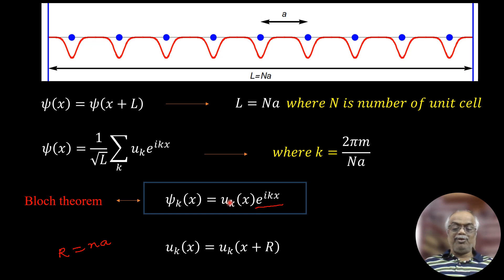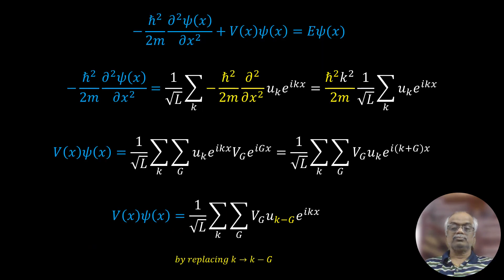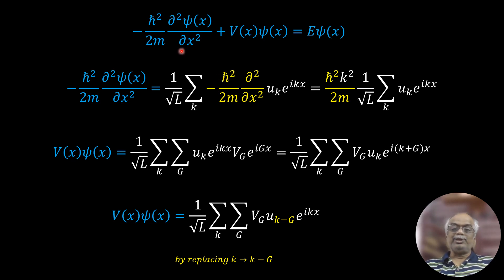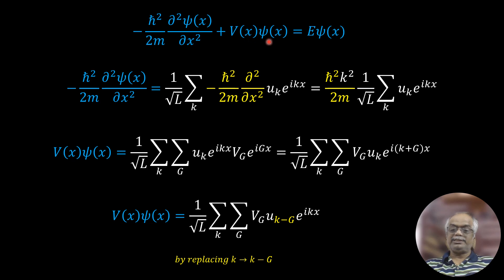Now if we check validity, this Bloch wave function must be a solution for the Schrödinger wave equation — that is the number one requirement. In the Bloch equation proof, we substitute into the Schrödinger equation, and it must satisfy that equation to be valid. So this is a proof method using the Schrödinger wave equation.